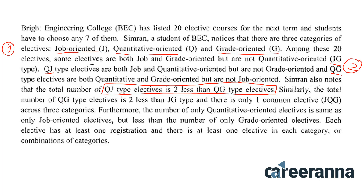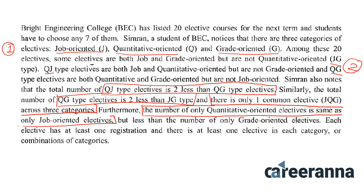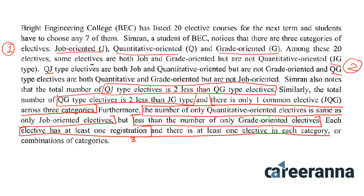The fifth piece of information is there is only one common elective JQG across all three categories. The sixth is that the number of only quantitative electives equals the only job oriented electives. The seventh is that only grade electives are greater than only J and only Q. The eighth is each elective has at least one registration, and the ninth is there is at least one elective in each category or combination.